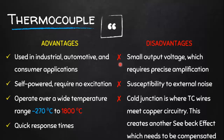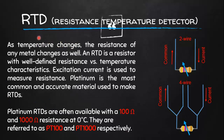The disadvantages of thermocouples include that they give a very small output voltage with respect to temperature change, which requires very precise amplification. They are susceptible to external noise because they may have long wires. There is also a cold junction where the thermocouple wires meet the copper circuitry, creating another Seebeck effect which needs to be compensated with a compensation circuit to accurately read the temperature.